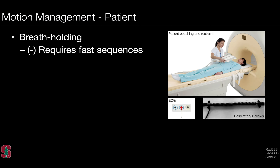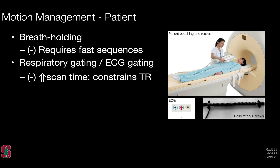When it comes to motion management from the patient perspective, there are several things that come into play. We can consider breath-holding, which we discussed in the previous lecture. This requires fast sequences that can be acquired during a reasonable period of respiratory suspension, so that can be a challenge. We can also consider respiratory gating and ECG gating. These may ultimately increase the scan time, but at the same time produce images that have less artifacts arising from respiratory or cardiac motion. This can have some constraints on the underlying TR as well, and in sequences where the TR is not constant, that can actually produce image artifacts.